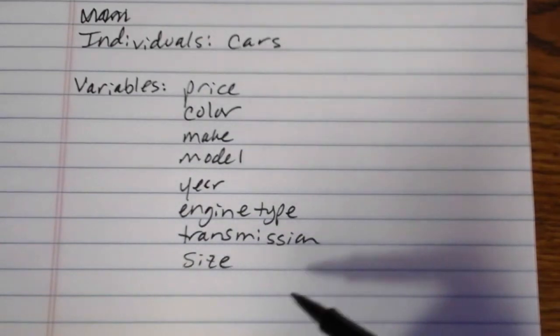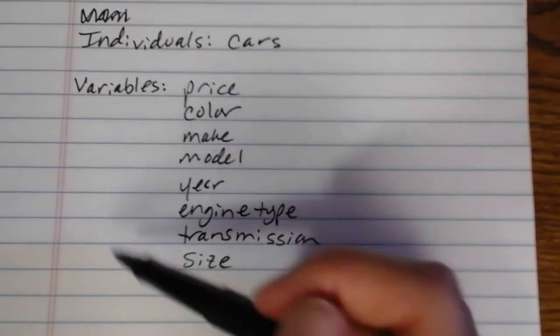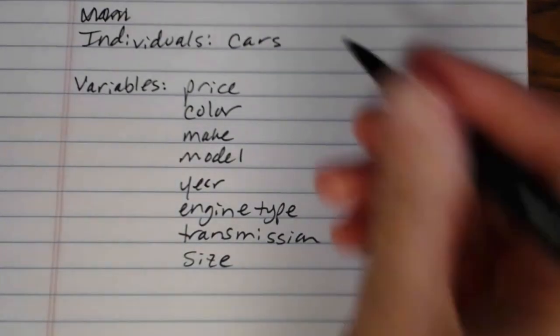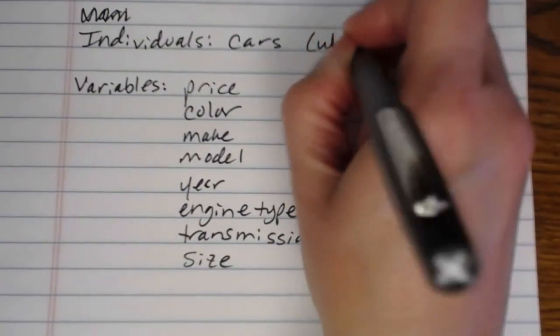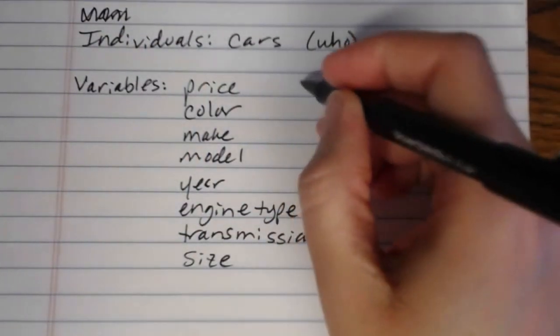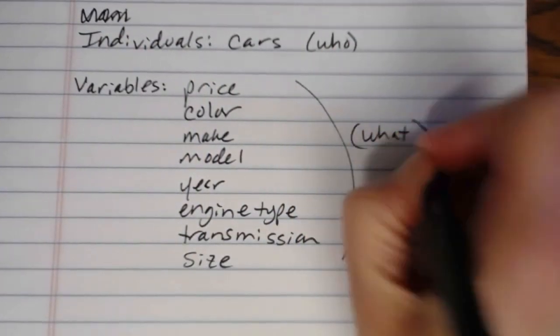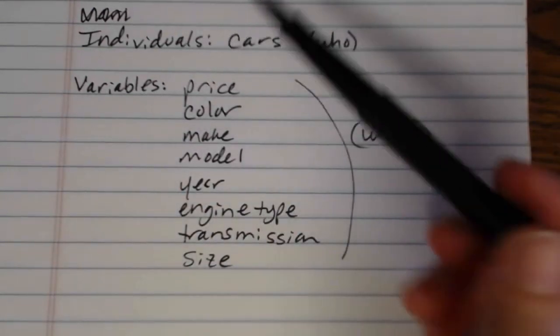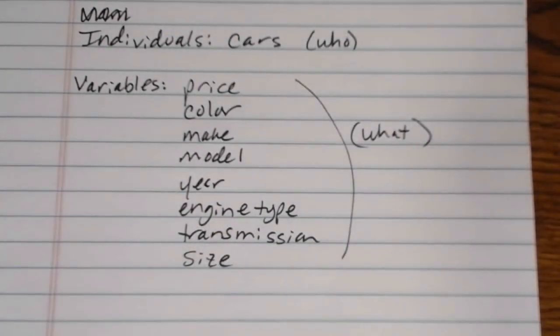This would be the information that we would be either observing or measuring or recording about the cars that we included in our study. So again, this is the who did we include in the study. That's the individuals. This is the what did we actually measure or record in the study. And the what are the variables. The who is the individuals. In the next video, we're going to take a look at some more terminology dealing with different types of variables.